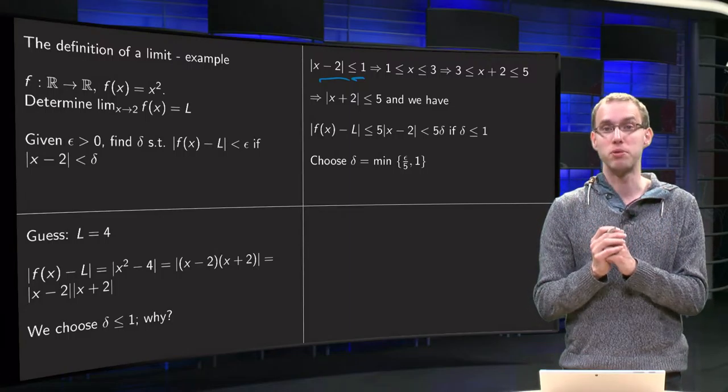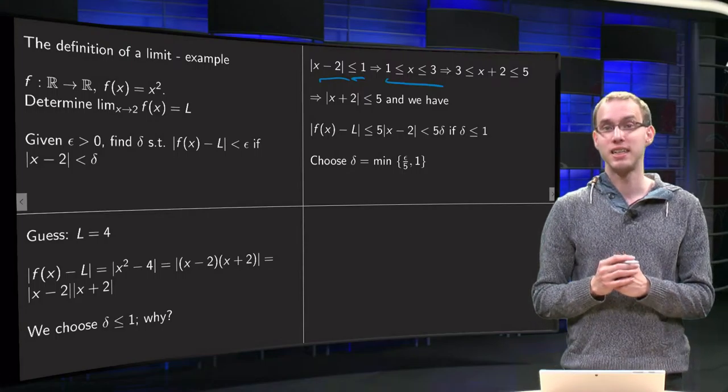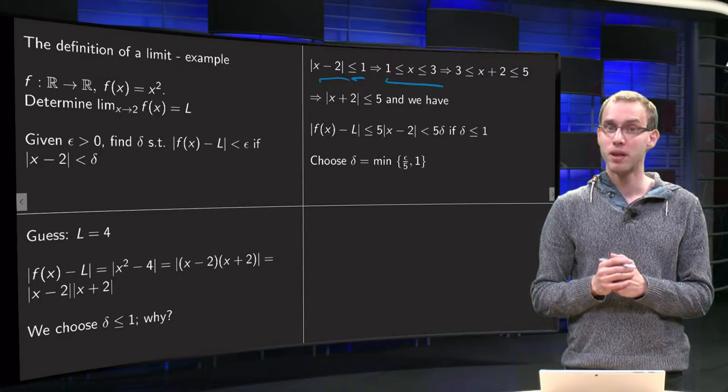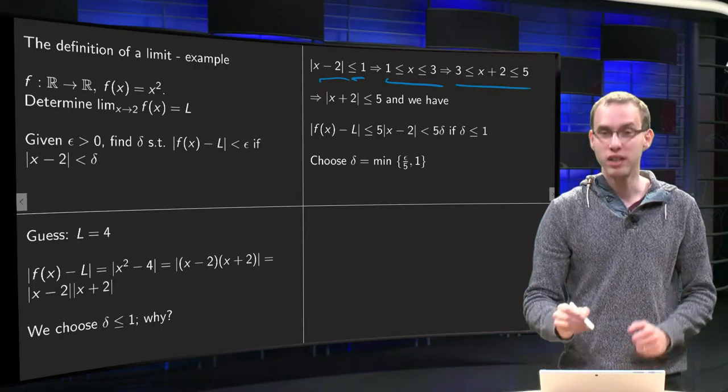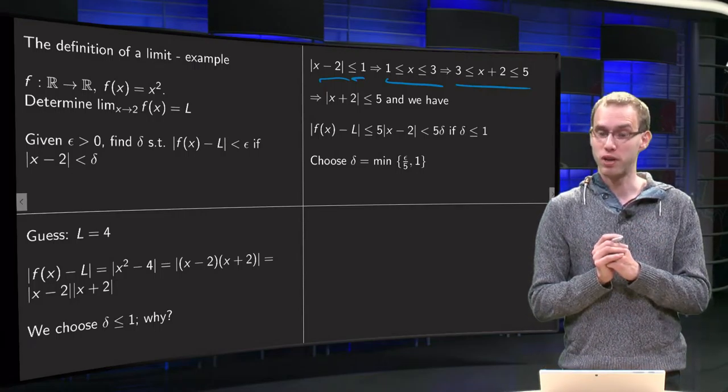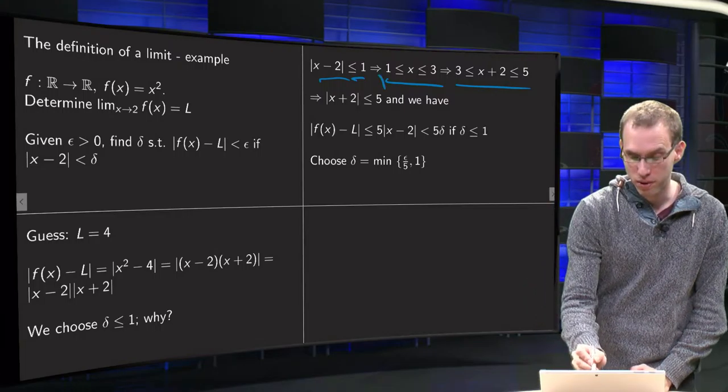...which means that if we add 2 to both sides, we get 3 ≤ x + 2 ≤ 5, so that means that |x plus 2| is smaller or equal than 5.